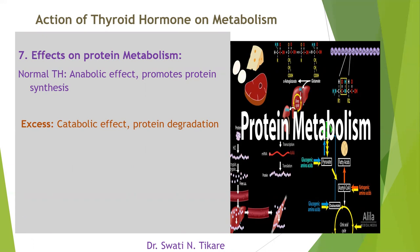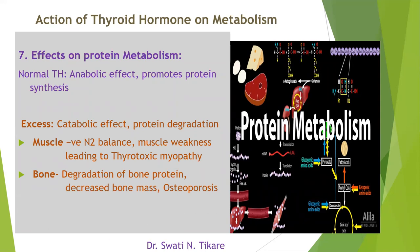If there is an excess of thyroid hormone, its action becomes opposite — catabolic — causing protein degradation. It is not that the same anabolic action increases more; rather, it reverses to catabolism. Protein is broken down mainly from muscle and bone. In muscle, there is a negative nitrogen balance causing muscle weakness, named thyrotoxic myopathy. In bone, degradation of bone protein leads to decreased bone mass causing osteoporosis.